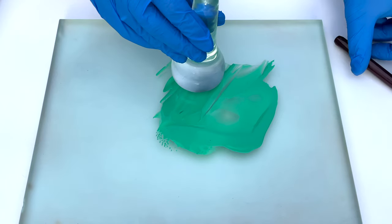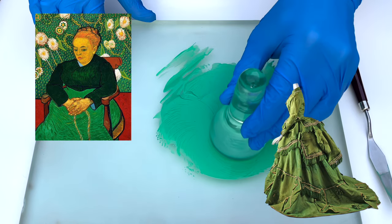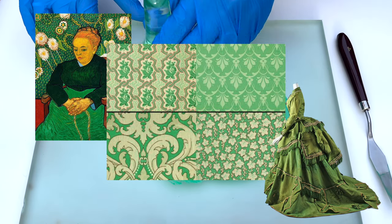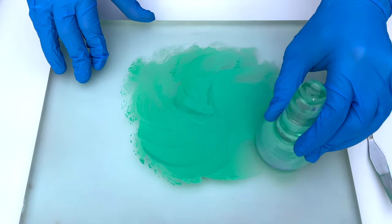But that wasn't the only downside. It was used for paint, dyes, for wallpapers, toys. Everything that was a bright green was made with this pigment.